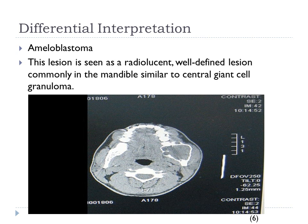The third differential interpretation is ameloblastoma. This lesion is seen as a radiolucent, well-defined lesion, commonly in the mandible, similar to Central Giant Cell Granuloma. In the CT scan shown, there is a widened, well-defined radiolucency on the left side of the mandible.